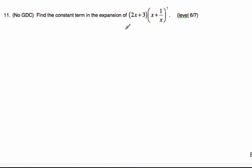In this problem here, we're going to find the constant term in this expansion. If I think about this, I know that I'm going to have 2x plus 3, and that's going to be multiplied by this thing here that it's going to have 8 terms.